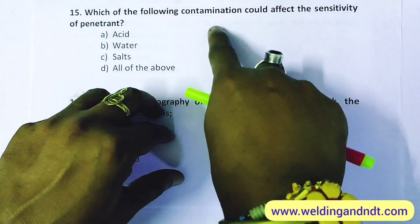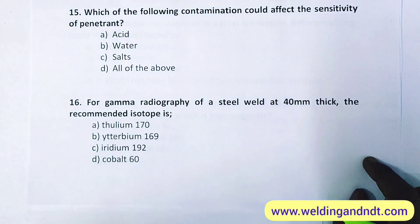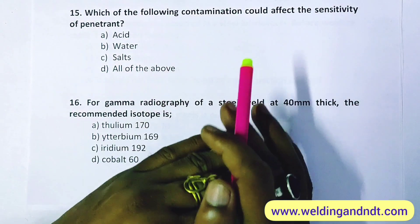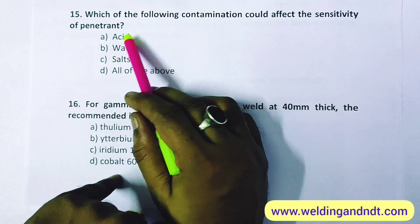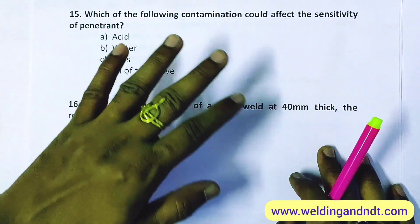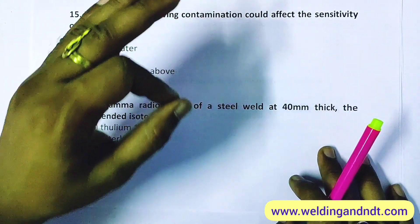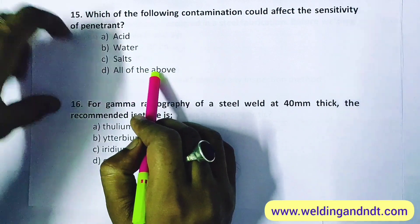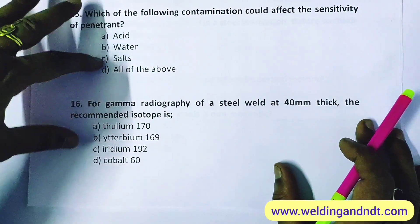Question 15: which contamination could affect the sensitivity of a penetrant? Options are acid, water, salts, and all of the above. Any foreign material or contamination will affect sensitivity. As explained in the lecture, the surface should be free from grease, rust, oil, and foreign particles. No contamination is good for dye penetrant testing. The answer is D — all of the above.